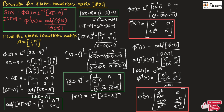Dividing the adjoint matrix by the determinant, the first term is (S-1) divided by (S-1)(S-1). Simplifying, we get (SI - A) inverse as [1/(S-1), 0; 1/(S-1)², 1/(S-1)].